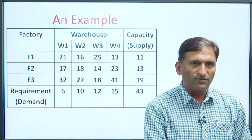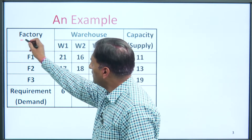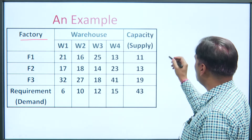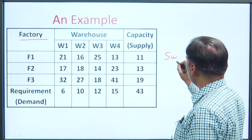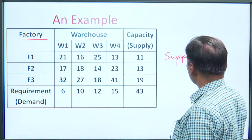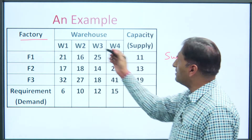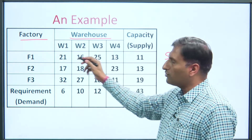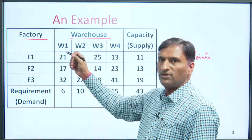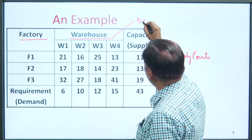As you can see, we have three different factories — these three factories are actually our three different supply points. Whenever transportation is happening, there will be some supply points and some demand points. These warehouses — in this case there are four warehouses, represented as W1, W2, W3, and W4 — these are the four demand points.